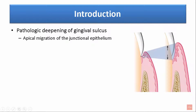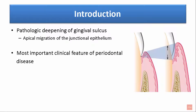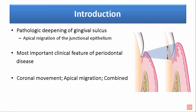The gingival sulcus is about 2-3 mm in depth clinically, but due to the extension of the plaque bacteria and destruction of the underlying periodontal tissues, the depth of the gingival sulcus can increase beyond 4 mm causing the development of the periodontal pocket. It is an important clinical feature of periodontal disease, and it can occur due to the coronal movement of the gingival margin, apical migration of the junctional epithelium, or a combination of both processes.